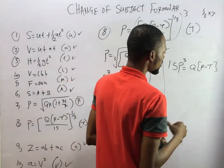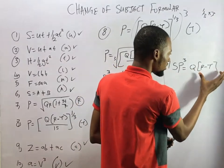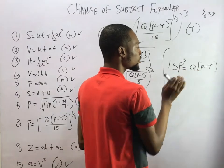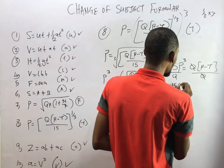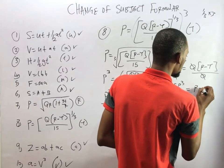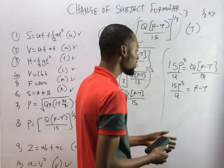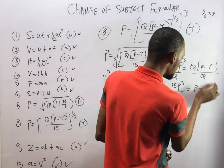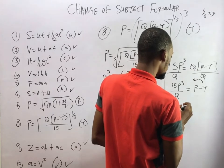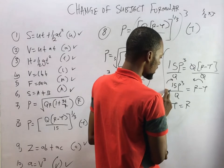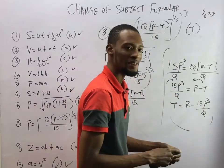Next, cross multiply: 15 times P cubed equals Q times (R minus T). Then divide both sides by Q to isolate the bracket: 15P cubed over Q equals R minus T. Since subtraction holds R and T, we move T across: T crosses the equality sign from negative to positive, and 15P cubed over Q crosses to become negative. Therefore R minus 15P cubed over Q equals T, so T equals R minus 15P cubed over Q.